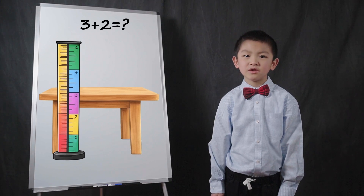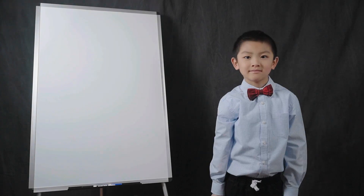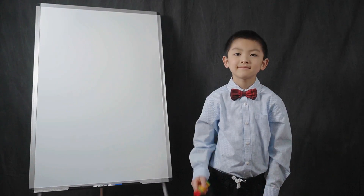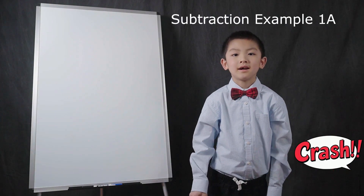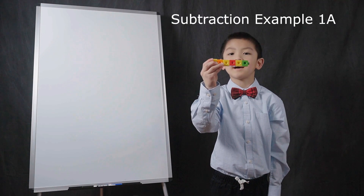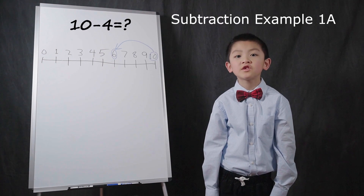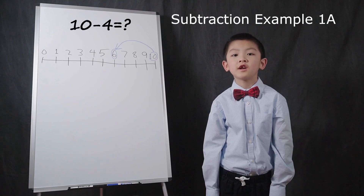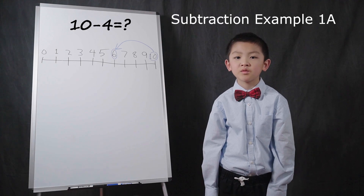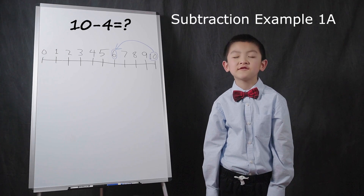A number line can be used for subtraction in two ways. Let's cover the first method. I had 10 snap cubes, and then I subtracted 4 cubes. I have 6 left. To show this on the number line, you start with 10 for the starting number of snap cubes, then hop backward 4, which represents removing 4 snap cubes. Where you end up on the number line is the solution. This is like the count-what-is-left method of subtraction.